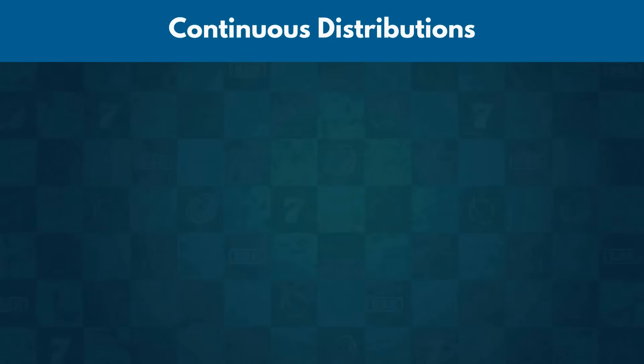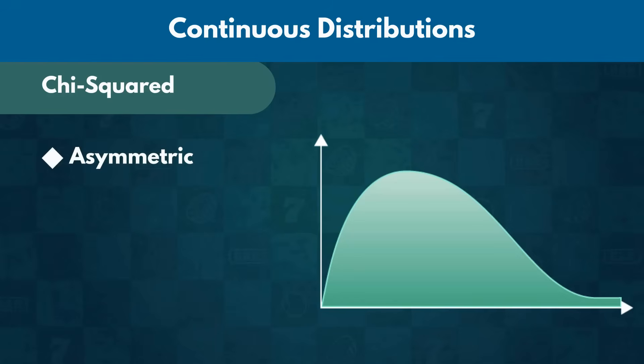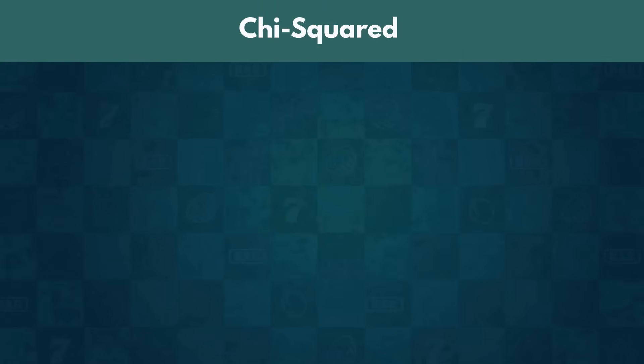Good job, everyone! Another continuous distribution we would like to introduce is the Chi-squared distribution. It is the first asymmetric continuous distribution we are dealing with, as it only consists of non-negative values. Graphically, that means that the Chi-squared distribution always starts from 0 on the left. Depending on the average and maximum values within the set, the curve of the Chi-squared graph is typically skewed to the left.